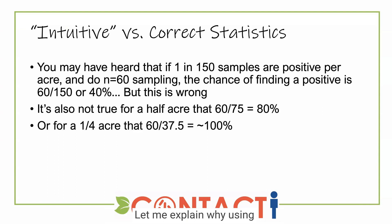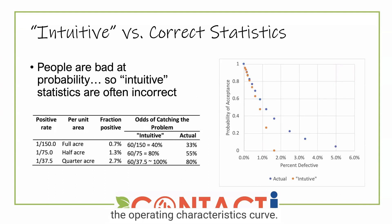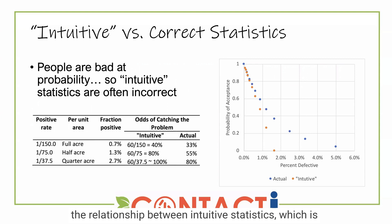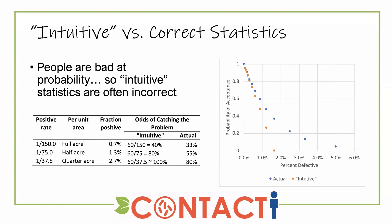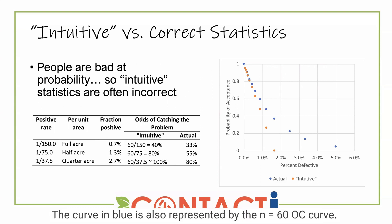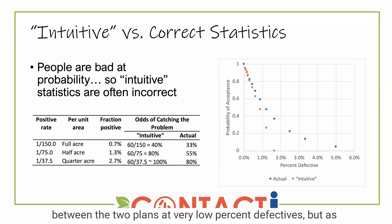Let me explain why using the operating characteristics curve. What you can see here in the graph on the right is the relationship between intuitive statistics, shown in orange, and actual statistics shown in blue. The curve in blue is also represented by the N equals 60 OC curve. What you can see is that there's pretty good agreement between the two plans at very low percent defective.